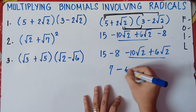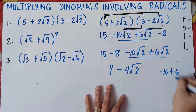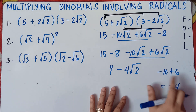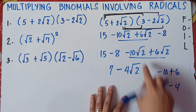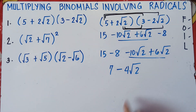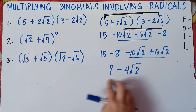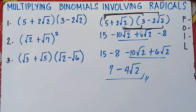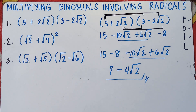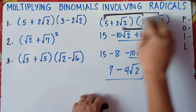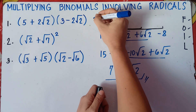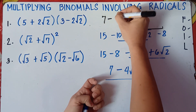So 7 minus 4 square root of 2 is our answer for number 1. We cannot combine the whole number with the radical term, so that's our final answer. If you have questions, feel free to leave a comment or message me on our Facebook channel, same name as our YouTube channel.